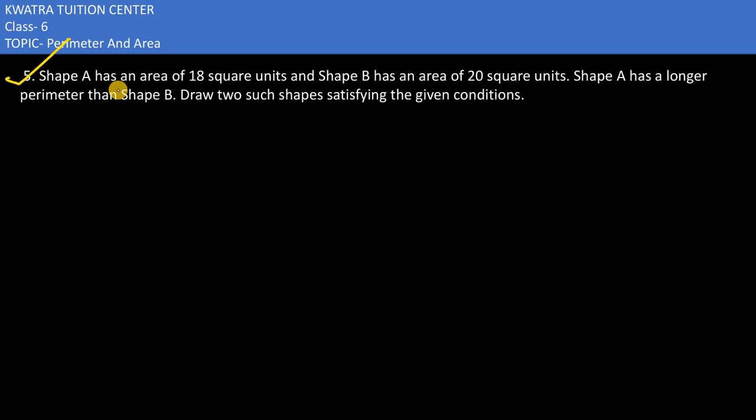In the fifth part of this problem, it says Shape A has an area of 18 square units and Shape B has an area of 20 square units. They are saying Shape A has a longer perimeter than Shape B. This is the condition. We need to draw two such shapes satisfying the given condition.